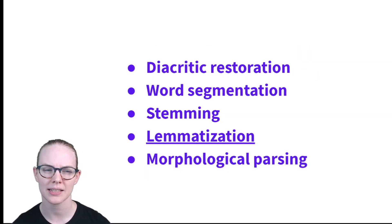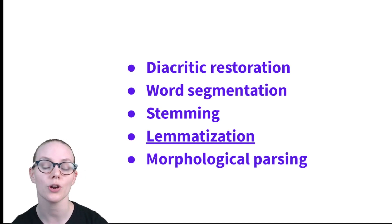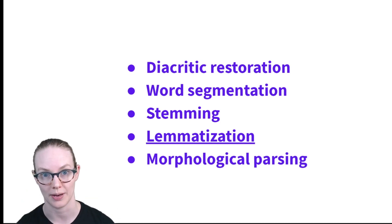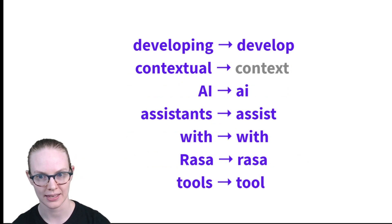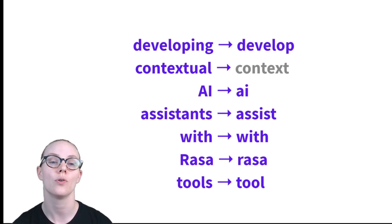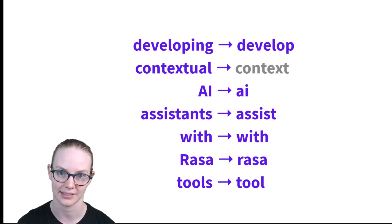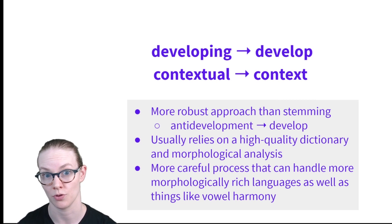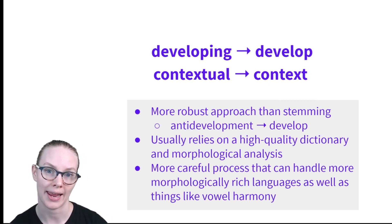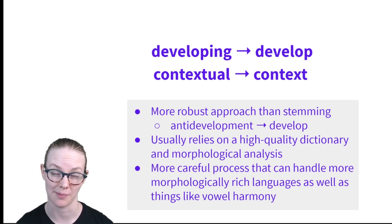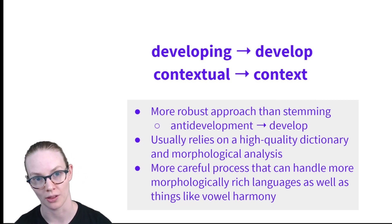Next is lemmatization. A lemma is basically the dictionary form of a word — the word you would look up if you wanted to know the meaning of something, ignoring the grammatical information added to it because of its context. So in this example, instead of taking 'contextual' and reducing it to 'context you,' lemmatization would recognize that the root of 'contextual' is 'context' — that's the lemma — and return 'context.' It's a much more robust approach than stemming. It can remove things from both sides or from the middle, and it identifies the root form of the word. It does generally rely on a high-quality dictionary — resources built by hand that are language-specific. It's a much more careful, often slower process, but you get much higher quality data out.